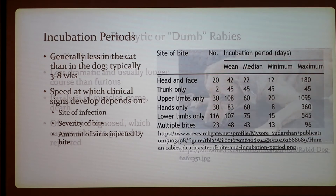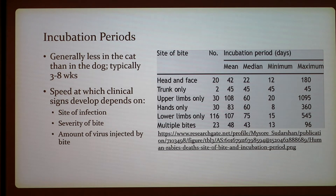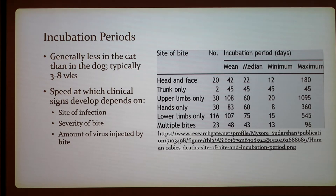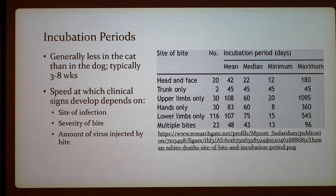The incubation period varies by species; this information is primarily documented for humans, as it's difficult to obtain for dogs and cats. The incubation period depends on how close the bite site is to the brain — the closer, the quicker. It is generally shorter in cats than in dogs, typically three to eight weeks. The speed at which clinical signs develop depends on the site of infection, severity of the bite, and amount of virus injected.